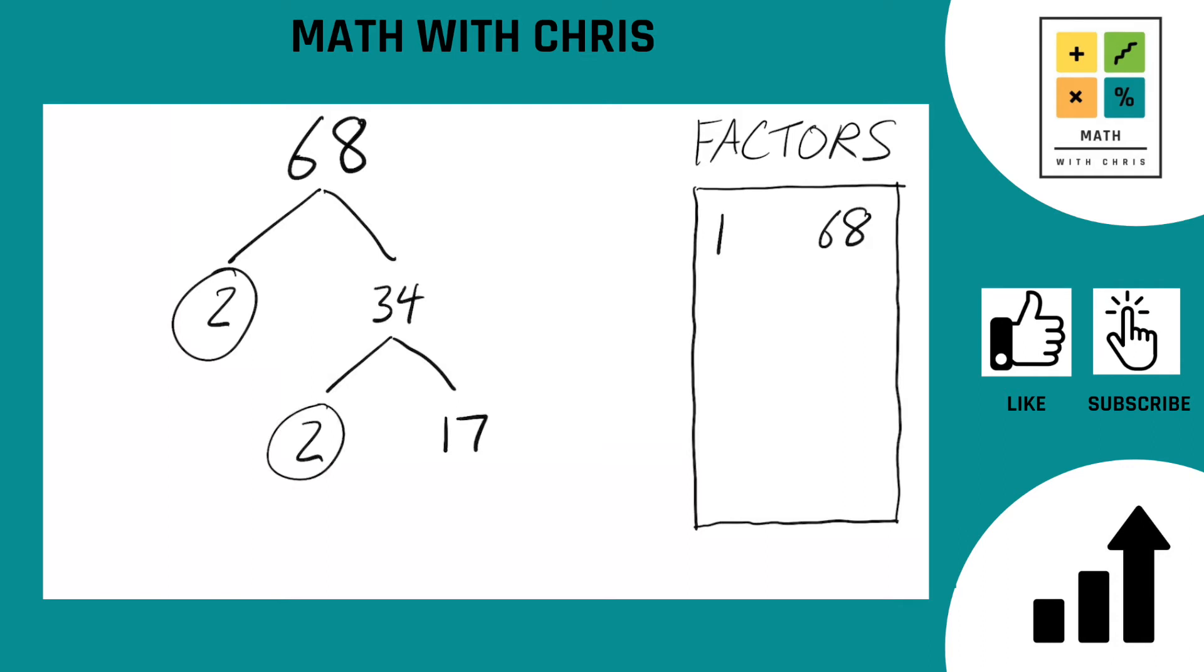Two is a prime number. Circle it. What about 17? 17 is also a prime number. So that is all done. Circle it. So our factor tree is done nice and quick here. Any path you take ends with a circled prime number. Our prime factors are a 2, another 2, and a 17.